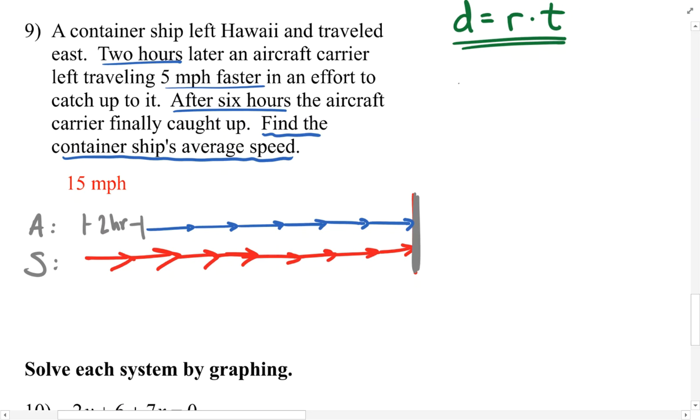As far as the algebra goes, the aircraft carrier traveled for six hours at some unknown rate. So, I'm going to write that as r times six, because that's rate times time. But more commonly, we usually write this as 6r. That equation represents how far the aircraft carrier has traveled.